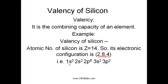Here, 1s2 are the number of electrons present in K shell, 2s2, 2p6 are the number of electrons present in L shell, and 3s2, 3p2 are the number of electrons present in M shell.